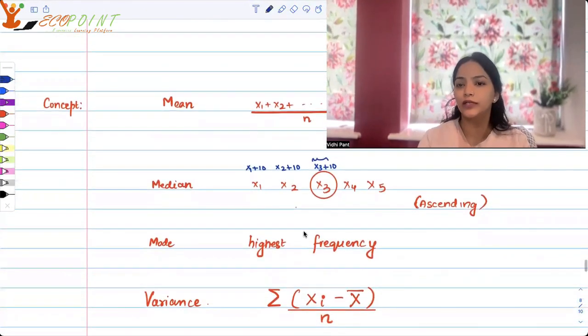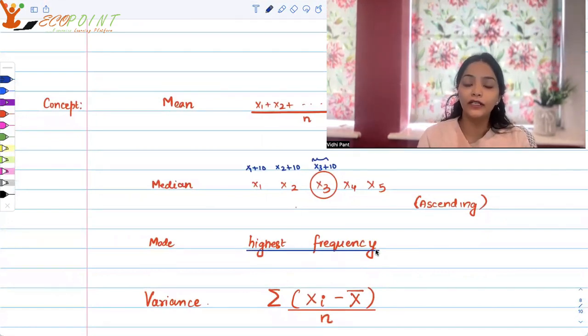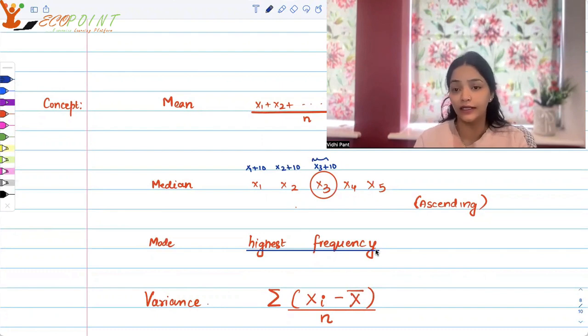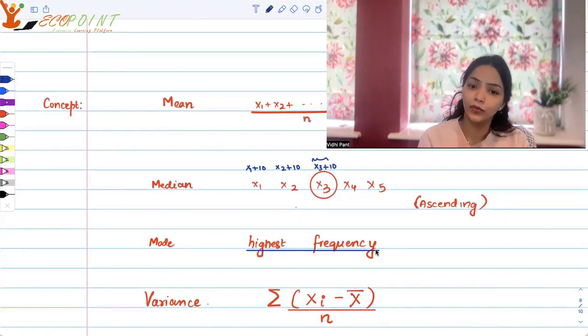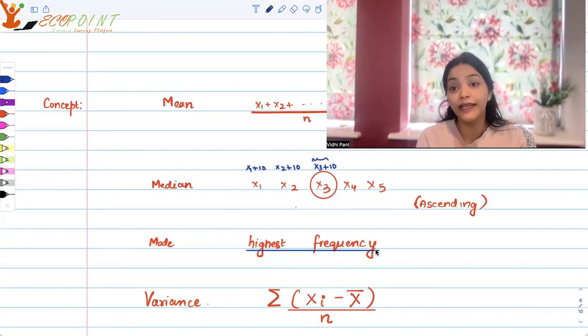Mode is the observation that comes with the highest frequency. The observation itself is changing. So even in case x3 or x4 came with the highest frequency, if x4 came with the highest frequency, it was twice in the data, then it will be your mode. But x4 plus 10 would be the mode because all the observations are getting plus 10, plus 10, plus 10.